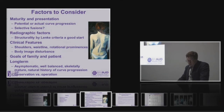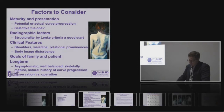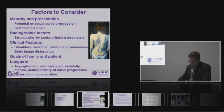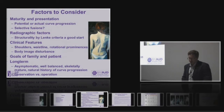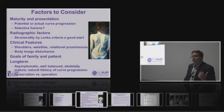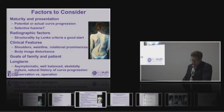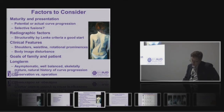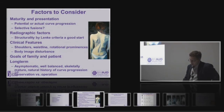In terms of the radiographic factors, John's already discussed the Lenke criteria which is a start but it's not ideal by any means in helping us to determine fusion levels and which curves we may be able to avoid fusing. But we certainly all look at the clinical features — the shoulders, waistline, rotational prominences. If the left shoulder is up I tend to go a little higher for those patients, and I might consider doing a selective fusion in patients in whom there's not significant deformity in the lumbar region.